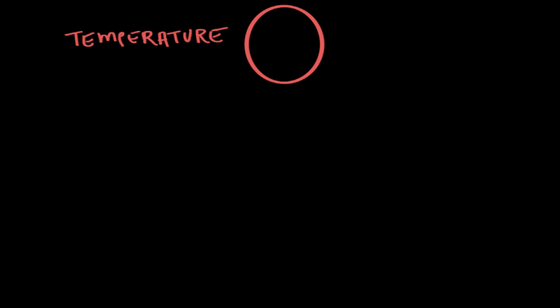If we think about a system and fill it with little individual particles, thinking about this microscopically, each little particle in the system is moving in some way — whether in rotation, in a straight line, curving, or a combination of these means. All of these little particles are moving, and the energy of motion is called kinetic energy. So all of these moving particles have kinetic energy, and the faster those little particles are moving, the greater their kinetic energy.